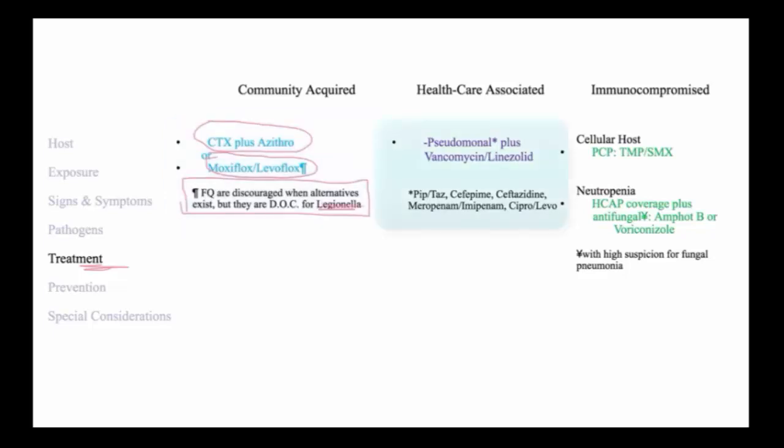In the treatment of healthcare-associated pneumonia, you want to use an anti-pseudomonal beta-lactam, which are listed below, including Piptazo, Cefepime, Ceftaz, Meropenem, or a fluoroquinolone. In addition, you generally want to cover MRSA with either vancomycin or linezolid.